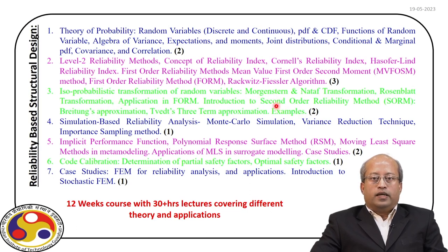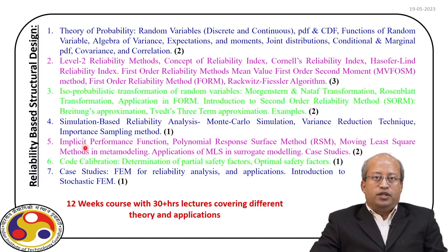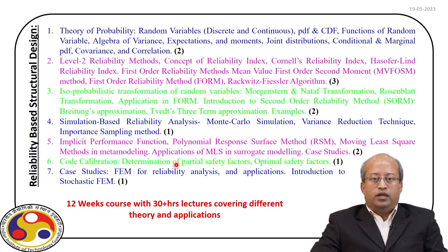Then we will discuss second order reliability methods, covering two different models — one proposed by Breitung and another proposed by Wett — and then we will discuss simulation based reliability in the fourth module, covering Monte Carlo simulations and different advanced simulation techniques. In the fifth module, we discuss implicit performance functions where we will learn response surface methods, moving least square methods, and their application. Then we will discuss code calibration covering partial safety factors and how to derive optimal safety factors seen in codal provisions. In the final module, we will talk about FEM for reliability analysis and an introduction to stochastic FEM.